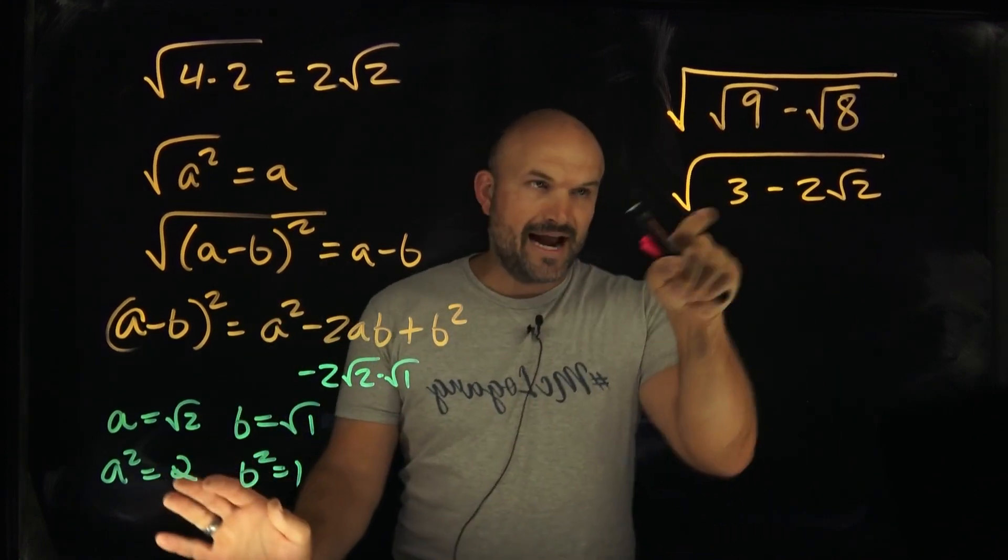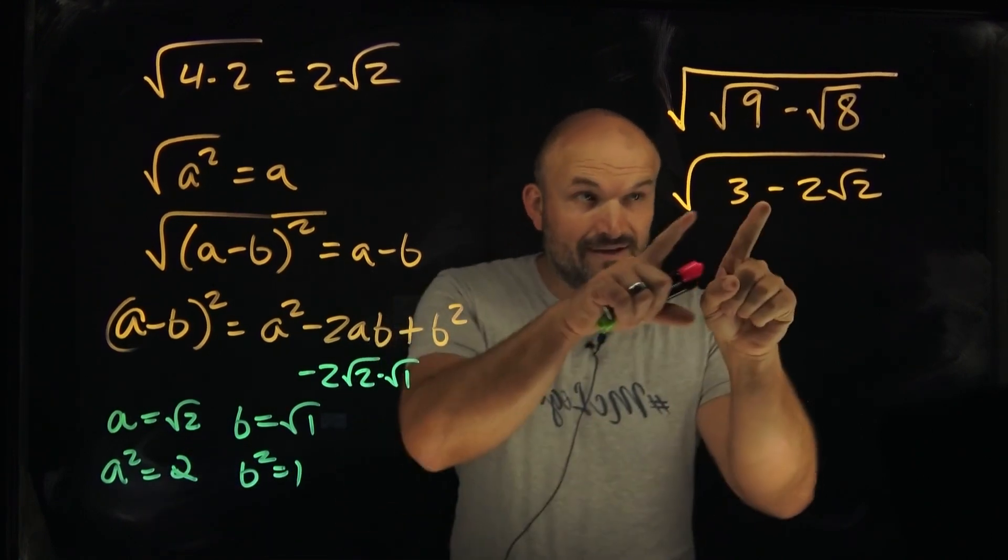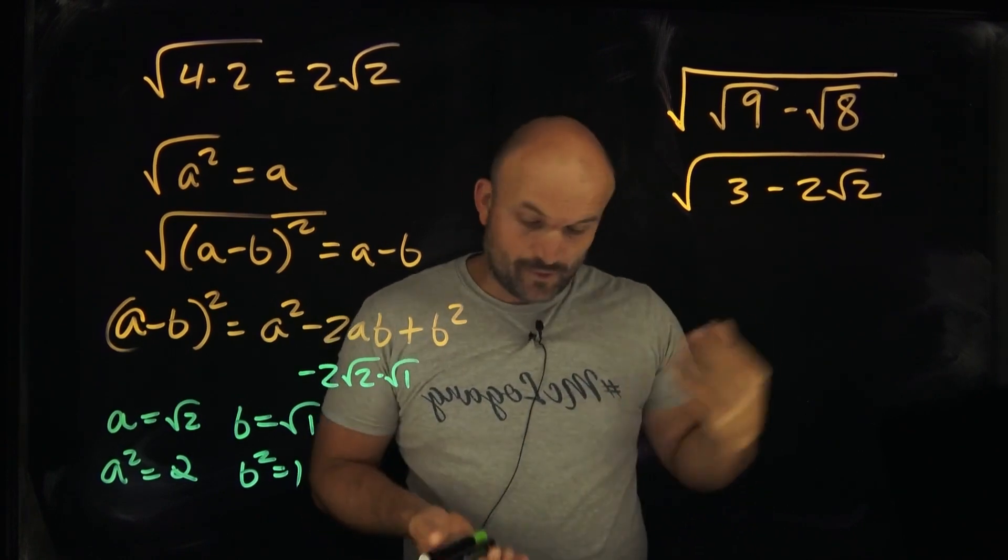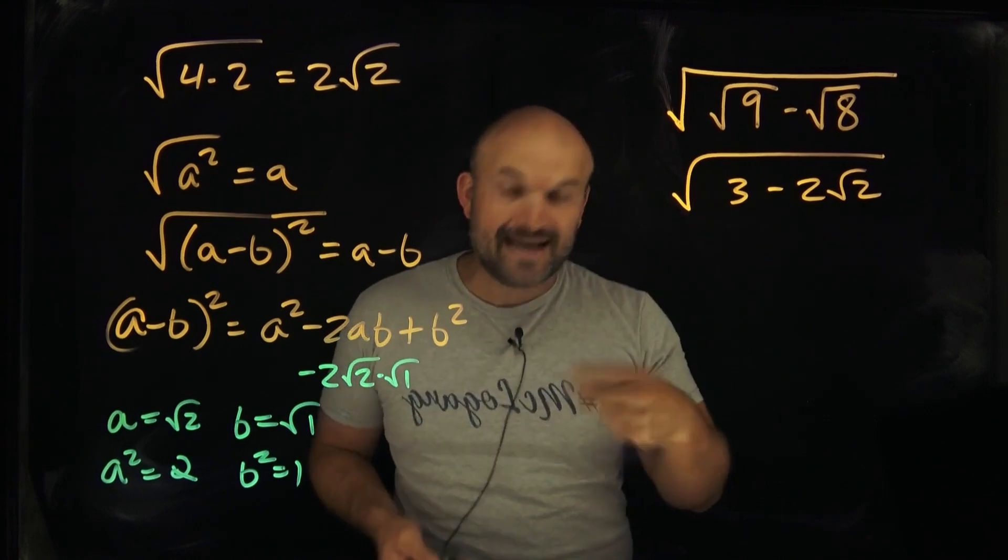I need an a squared plus a b squared. So you might be thinking, well, I have a 3 here. How can I get a 2 and a 1 from a 3? Now, thankfully here, this is the form. You see, these two terms are separated by subtraction. So therefore, what I can actually do in this example is I can actually rewrite my 3 as a 2 plus 1.